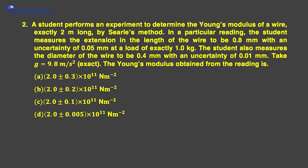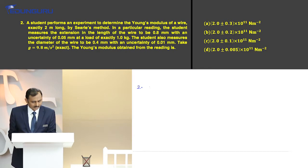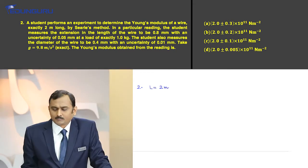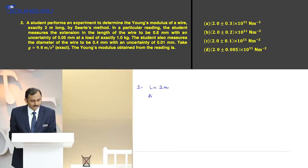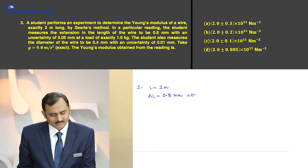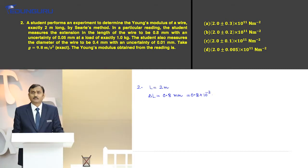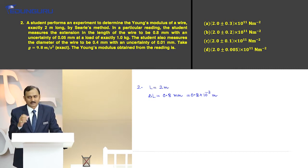The second question: a student performs an experiment to determine the Young's modulus of a wire exactly 2 meters long by Searle's method. In a particular reading, the student measures the extension in the length of the wire to be 0.8 mm, or 0.8 × 10⁻³ meters. While reading the question, you have to comprehend the data — then only you can process it and get the outcome.